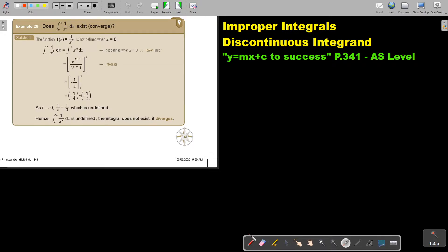Let's look at another example. Does the integral from 0 to 4 of 1 over x squared dx exist? That means converge. The function is not defined when x is 0. That is important.